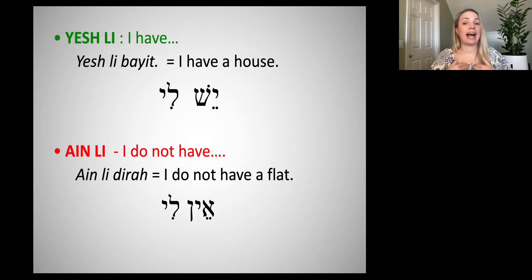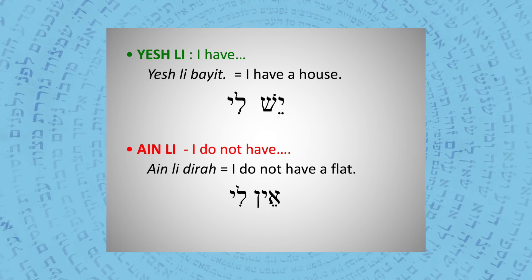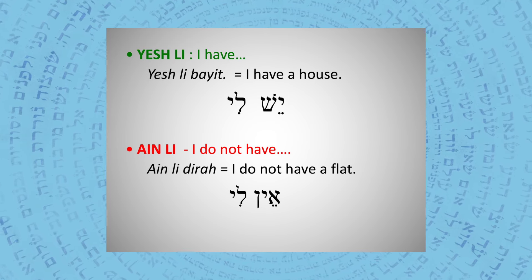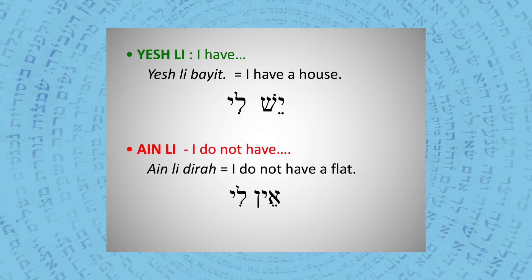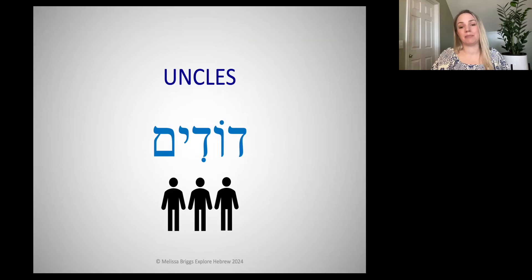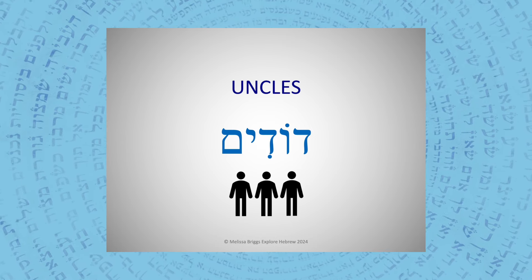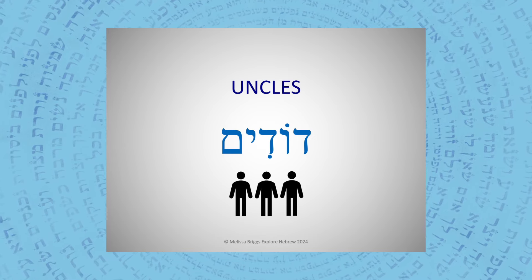With yesh li, I have a sister — yesh li achot. Or you might say 'I do not have a sister' — ain li achot. Let's try that with some of the nouns we learned last week. How would I say 'I do not have uncles'? Ain li dodim — I do not have uncles. But if I wanted to say 'I do have uncles' — yesh li dodim.